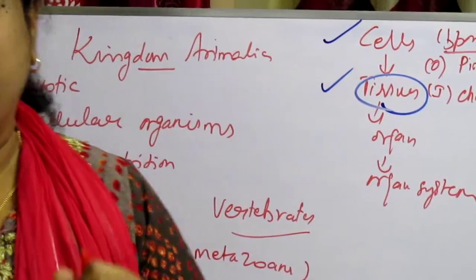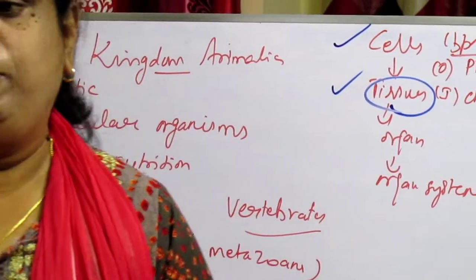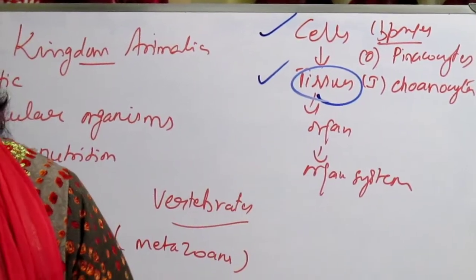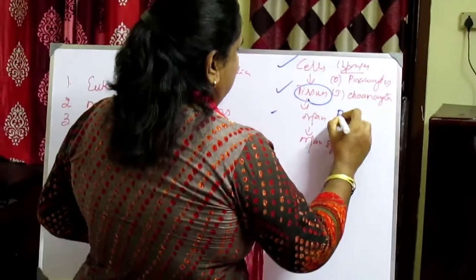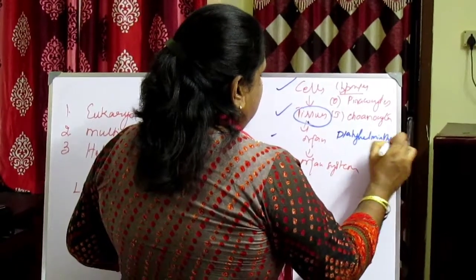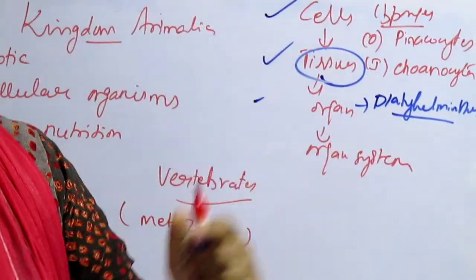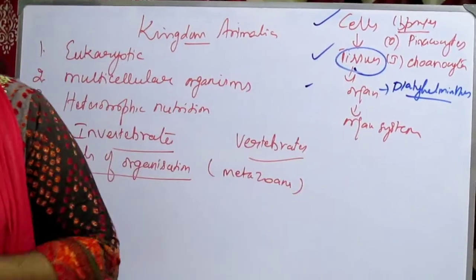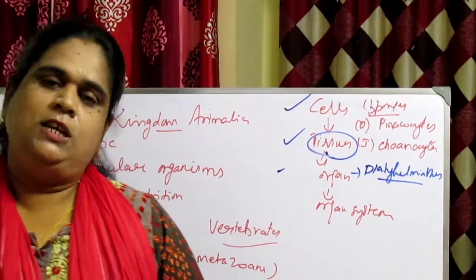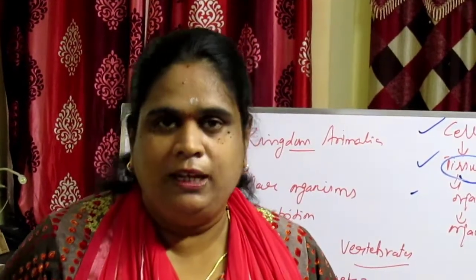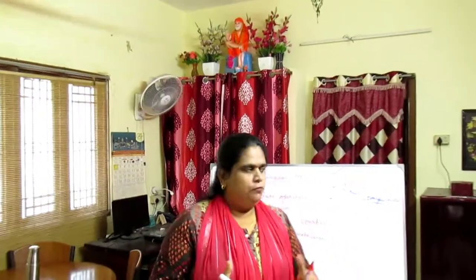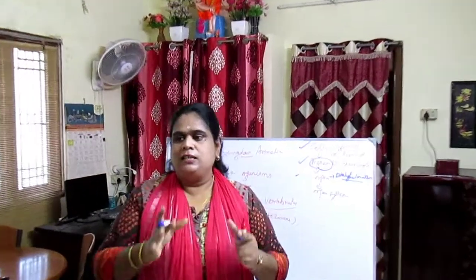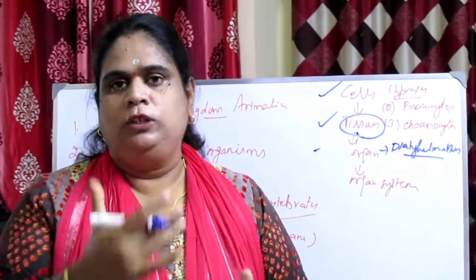At the organ level of organization, different kinds of tissues form organs that perform a specific function. This is a further advancement over the tissue level and it appears for the first time in phylum Platyhelminthes. It is also seen in other higher phyla. At the organ system level, the most efficient and highest level of organization is exhibited by flatworms, nematodes, annelids, arthropods, molluscs, echinoderms, and chordates. Tissues organize to form organs and organ systems, and each system is associated with a specific function.